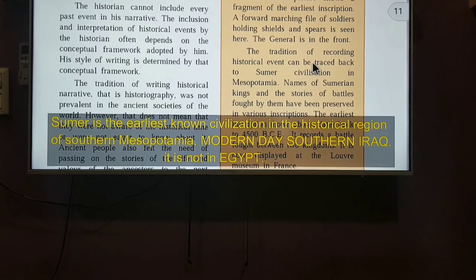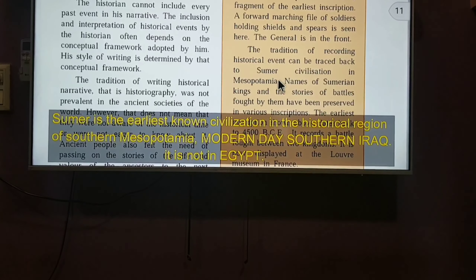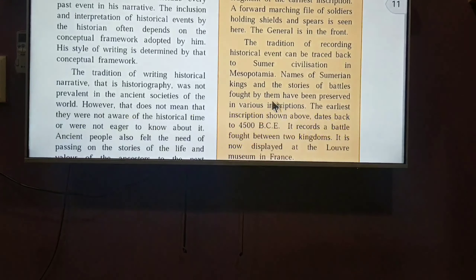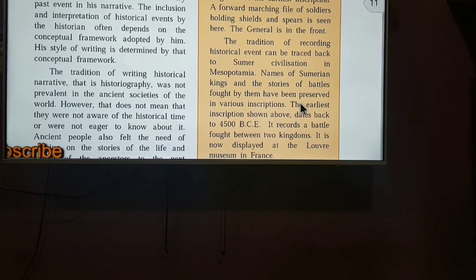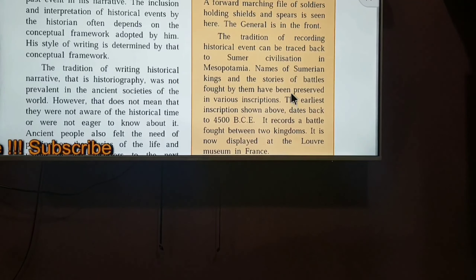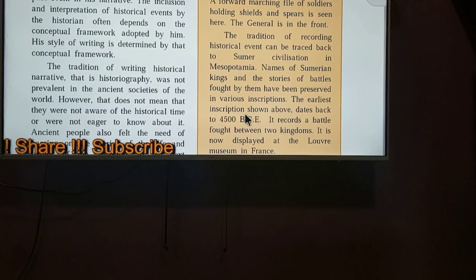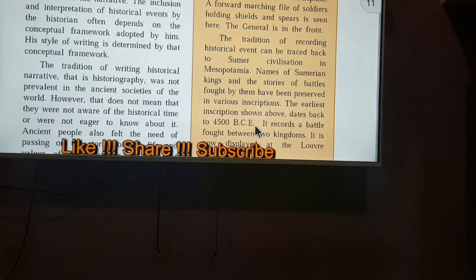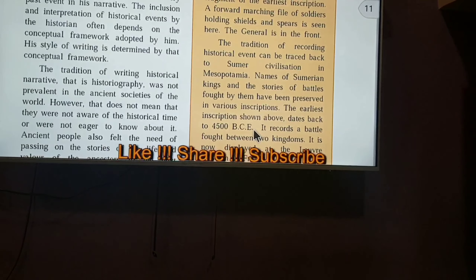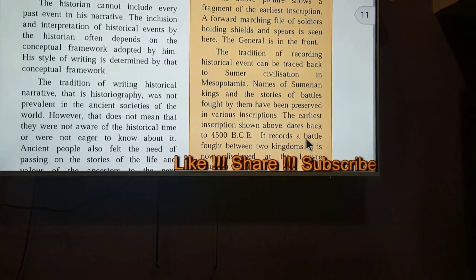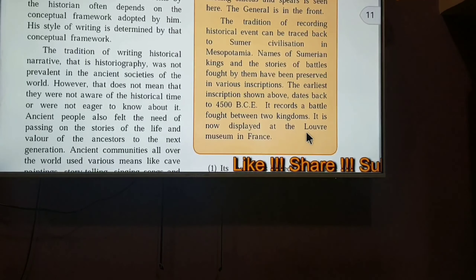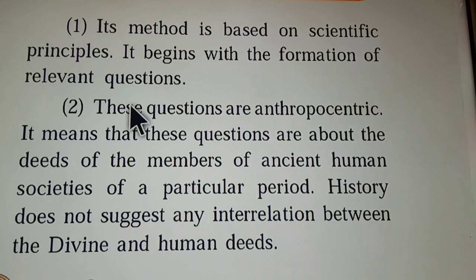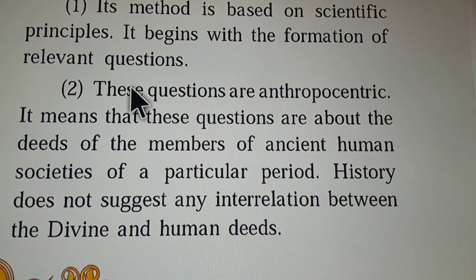We have already discussed that this method is based on scientific principles and begins with the formation of relevant questions. The second point is that these questions are anthropocentric — meaning we study how man evolved from an ape-man, referencing the British biologist Darwin's theory, and we study this through the deeds of members of ancient human societies of a particular period.